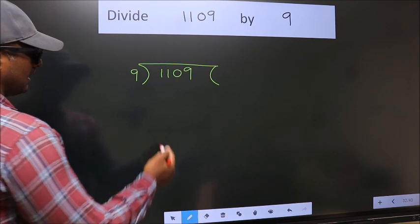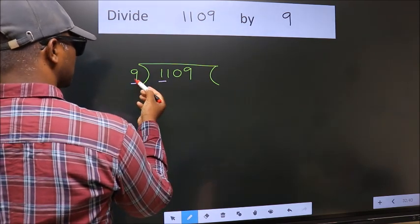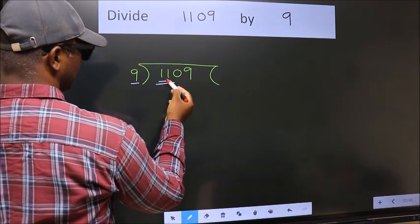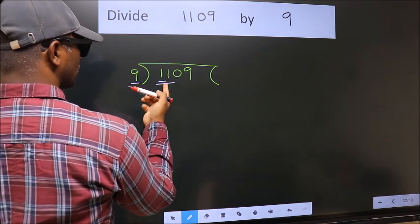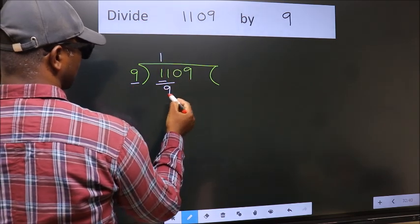Next. Here we have 1, here 9. 1 is smaller than 9, so we should take 2 numbers: 11. A number close to 11 in the 9 table is 9 1s, which is 9.